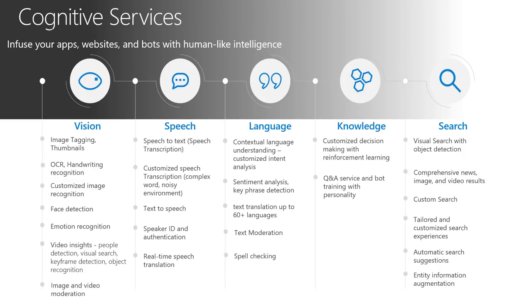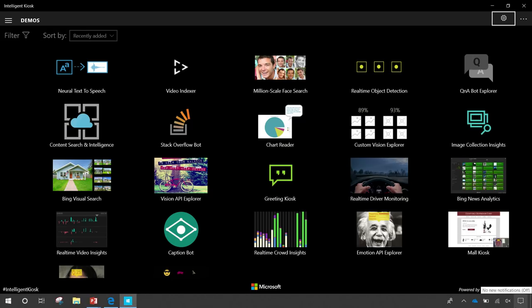It gives you the ability to test out many of these services, and we also give you the ability to build that kiosk yourself. I'm going to walk you through just a couple of those things. The Intelligent Kiosk is an app that you can download from the Windows Store. Anytime you go to a conference or come to our Executive Briefing Center here in the Redmond, Seattle area, you would have the ability to test this out.